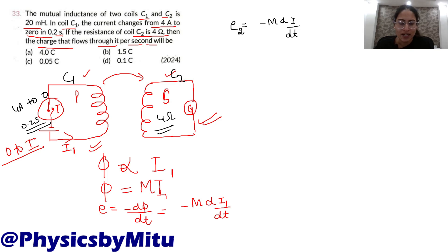Now, you have to find EMF in the secondary coil. In the second coil, this EMF is due to the change in current in the first coil, so we write di1/dt. EMF in the secondary coil is induced because of the first coil, so it's -M·di1/dt.